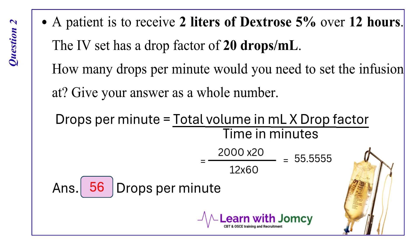In the next example, 1 hour equals 60 minutes, so 12 multiplied by 60 gives us the time in minutes. The answer is 55.555, which we round to the nearest whole number. Since this doesn't round down cleanly, we use 56 drops per minute.